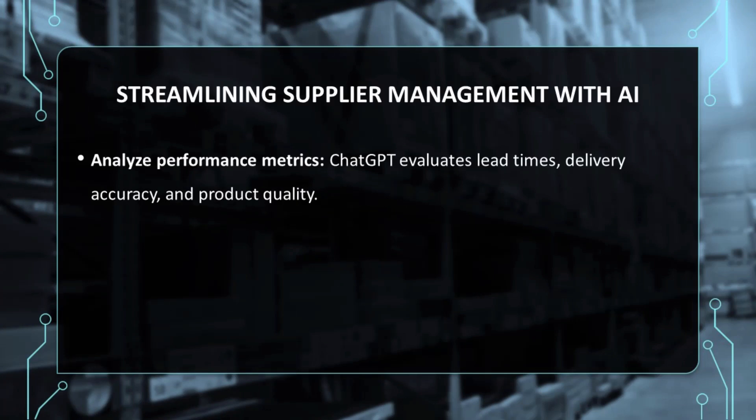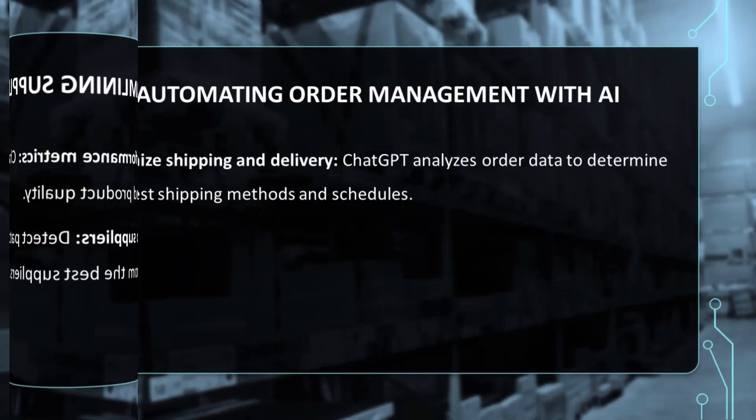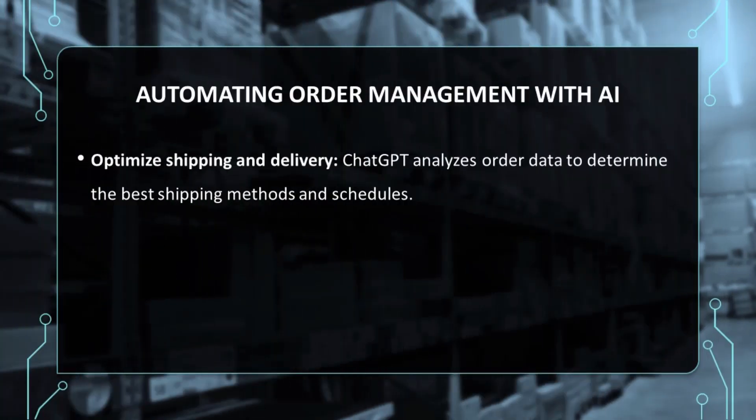Supplier management: ChatGPT can also streamline supplier management processes by analyzing supplier performance metrics such as lead times, delivery accuracy, and product quality. By discerning patterns and trends within supplier data, ChatGPT facilitates the identification of top-performing suppliers, ensuring timely and quality deliveries of product.